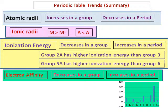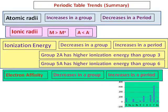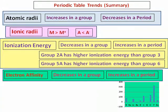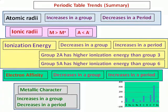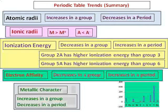Electron affinity decreases in a group and it increases in a period. A graph is also given which shows the discrepancies in electron affinity as you go from group 1 to group 7. Group 8 doesn't accept any electron. The last trend is metallic character — it increases in a group and decreases in a period.